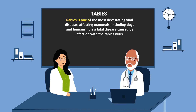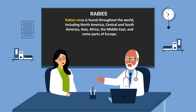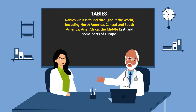Rabies is one of the most devastating viral diseases affecting mammals, including dogs and humans. It is a fatal disease caused by infection with the rabies virus. The rabies virus is found throughout the world, including North America, Central and South America, Asia, Africa, the Middle East, and some parts of Europe.